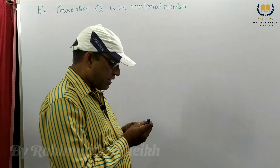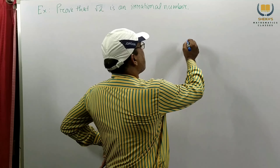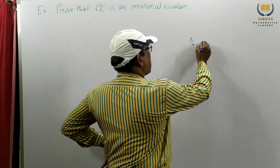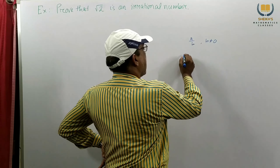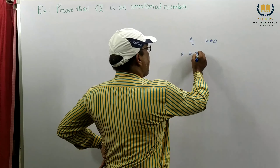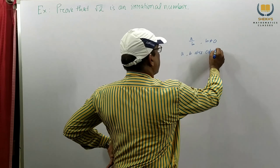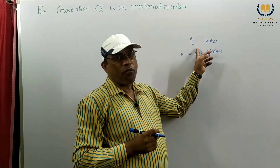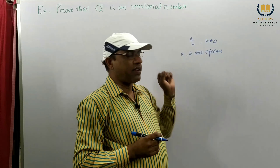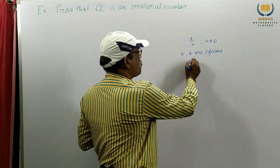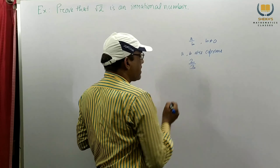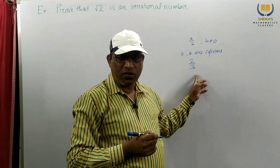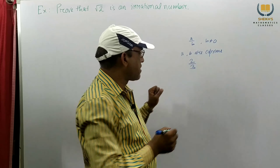We know from lower class, a rational number is a number which can be expressed in the form A by B, where B is not equal to 0, and A and B are co-prime. Co-prime means they have no common factor. A and B are distinct co-prime numbers, for example 2 by 3 is co-prime — they have no common factors other than 1. So this is a rational number.